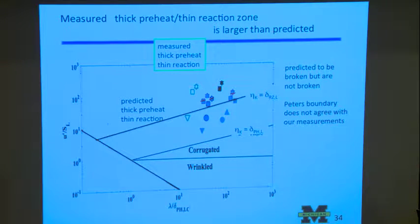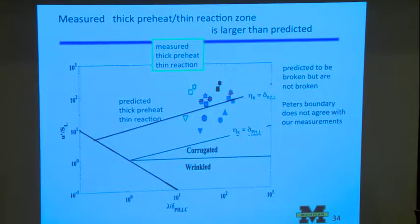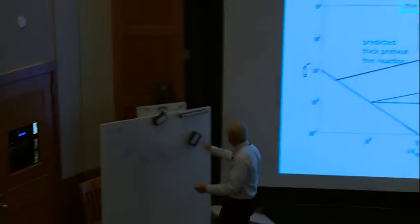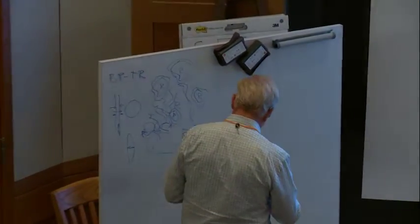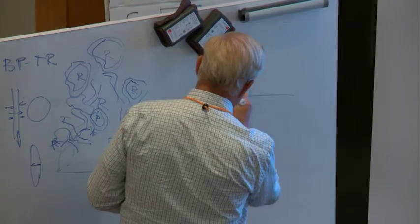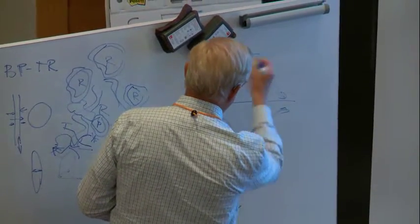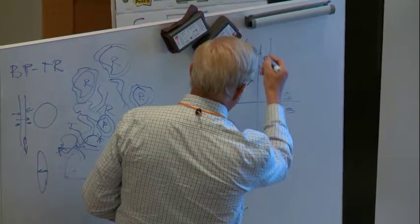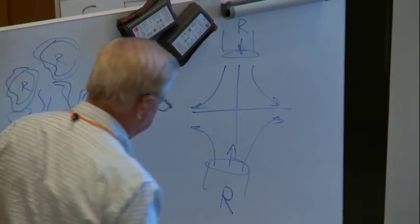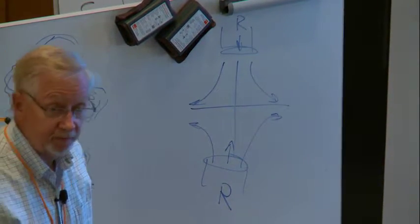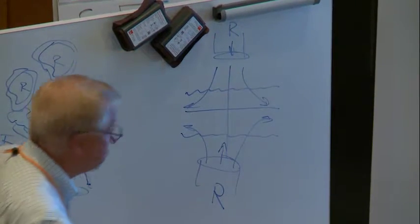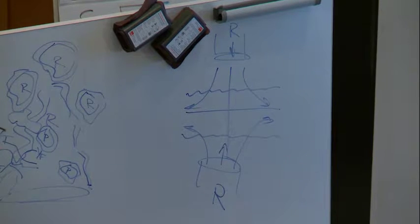The second question that was asked was, what about counter-flow flames? Now, you can create a counter-flow premix flame. Professor Law and his graduates have worked on this problem very nicely. If you have reactants coming out of a tube, and you have reactants coming out of another tube, you will form a stagnation point right in the middle. And if you light this thing off, you'll see a flame that sits here and another flame that sits here. So this is the so-called twin flame.